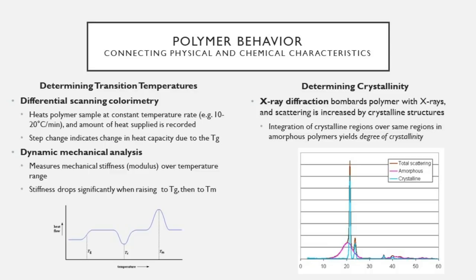Dynamic mechanical analysis (DMA) — sometimes called dynamic thermal analysis (DTA) — measures the mechanical stiffness or modulus of a polymer over a temperature range. When heating a semi-crystalline polymer, the stiffness first drops significantly — almost three orders of magnitude — first at the glass transition temperature, and then at the melting temperature, which disrupts all crystalline structures, making the polymer completely amorphous and rubbery again.